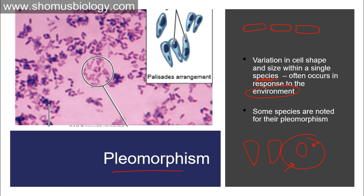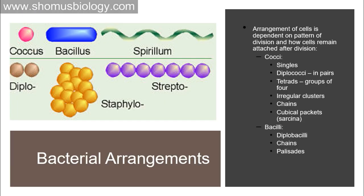Some species are noted for their pleomorphism — altering their shape and size based on environmental conditions. This is common in bacteria generally present in soil and common environmental conditions, not usually those infecting human tissue. The arrangement of cells depends on the pattern of cell division and whether the divided cells remain attached or separate, and how they attach — in a straight chain or in a grape-like cluster.